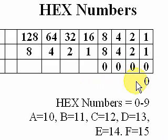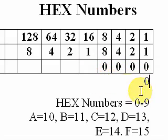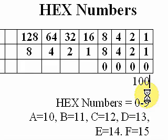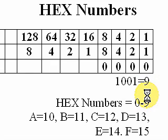We can prove this by putting in some numbers. The number 9 in binary is 1, 0, 0, 1, which in decimal equals 9. So in binary it's 1, 0, 0, 1, in decimal it's 9, and for hexadecimal it's also 9 — it doesn't change until we get to 10.